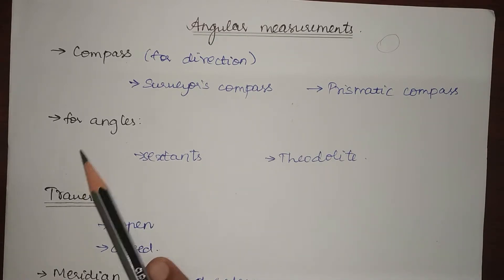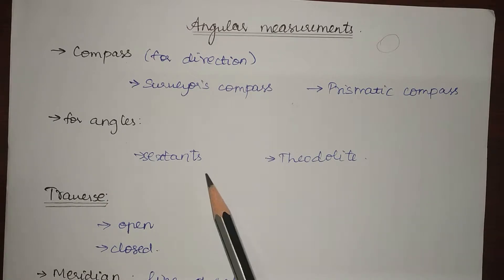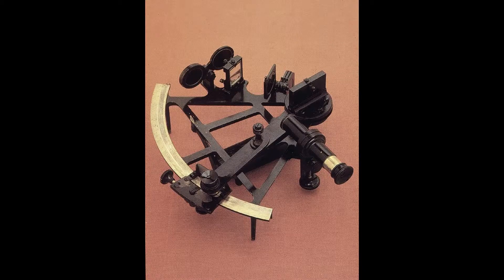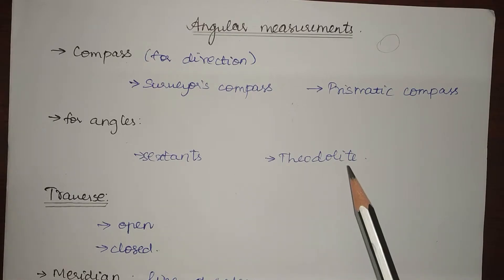To find angles, we use sextants and theodolites.